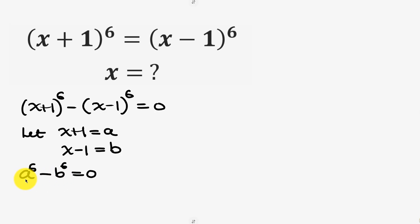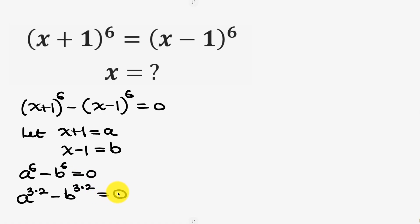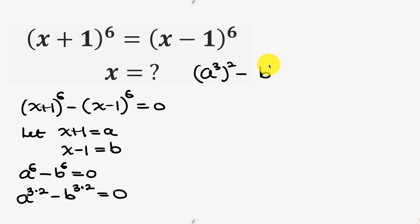Now we can simplify this further. a to the power of 6 is the same as (a³)², and b to the power of 6 is the same as (b³)², because this power multiplies this power to give back 6. So we have (a³)² minus (b³)² equal to 0.